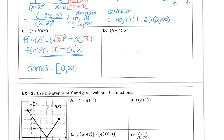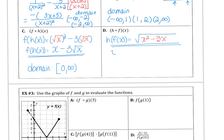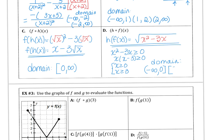For h of f of x, the square root is the outer function and we substitute f of x, which is x squared minus 3x, inside. For the domain, the argument x squared minus 3x must be greater than or equal to 0. Factoring gives x(x minus 3) ≥ 0, so the domain of h of f of x is negative infinity to 0, including 0, union 3 to infinity.